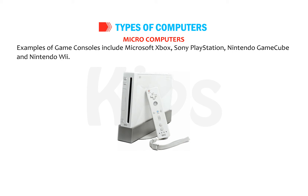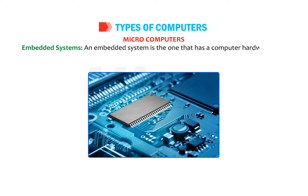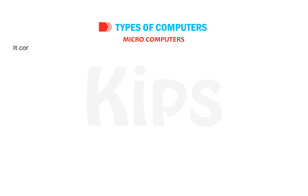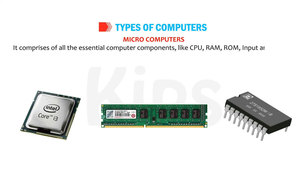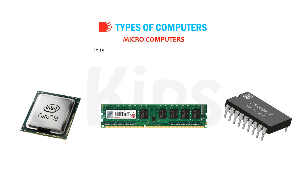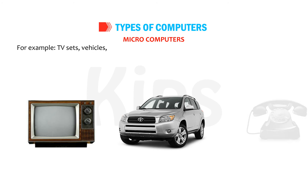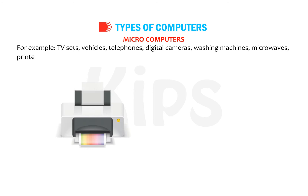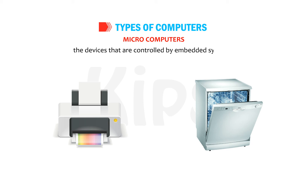Embedded Systems: an embedded system is one that has computer hardware with software embedded or implanted into a larger device. It comprises all the essential computer components like CPU, RAM, ROM, and input and output medium, but does not have a disk drive, keyboard or screen. It is designed to perform a specific task. For example, TV sets, vehicles, telephones, digital cameras, washing machines, microwaves, printers, dishwashers and medical equipment are devices controlled by embedded systems.